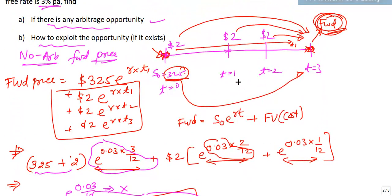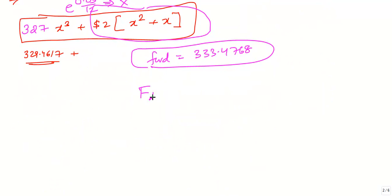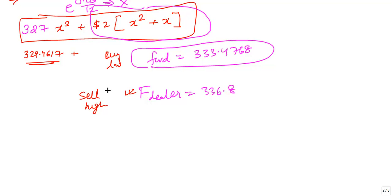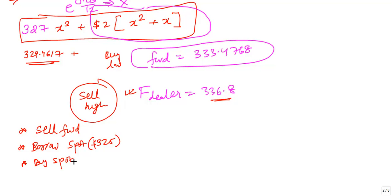The computed no-arbitrage forward price is $333.4768. The dealer is selling the forward at $336.8, which means the dealer's price is expensive relative to fair value. Since there is an arbitrage opportunity, we apply the rule: sell high and buy low. So we will sell this forward — this is called cash-and-carry arbitrage: sell the forward and buy the spot.